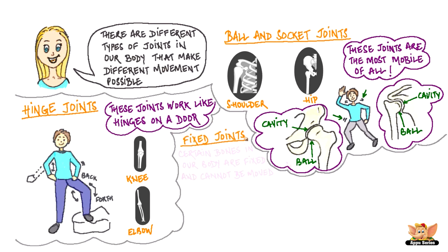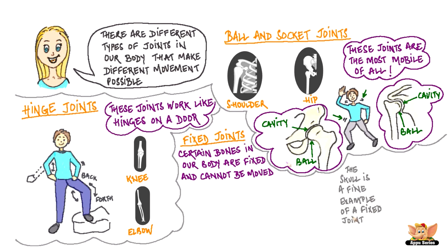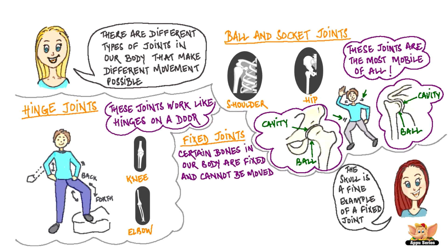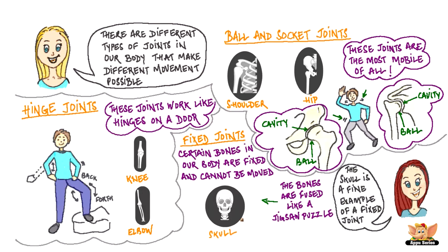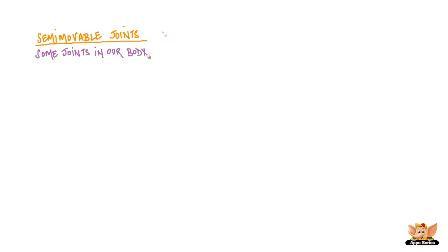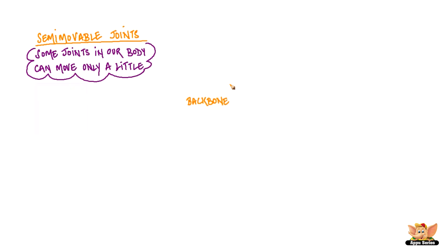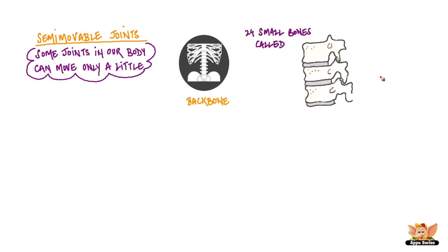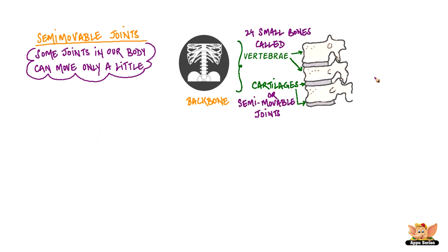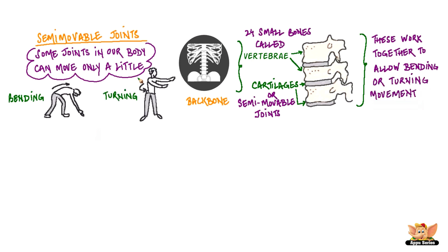Fixed joints: certain bones in our body are fixed together and cannot be moved. The skull is a fine example of a fixed joint where the bones are kind of fused like a jigsaw puzzle and there is no movement possible. Semi-movable joints: some joints in our body can move only a little. They are found in our backbone. The backbone has 24 small bones called the vertebrae that have semi-movable joints. These semi-movable joints or cartilages work together to allow bending or turning movement by the spine.